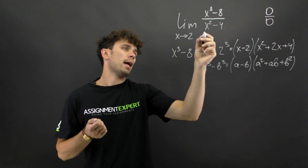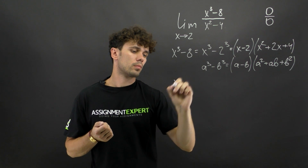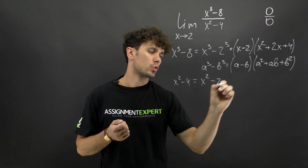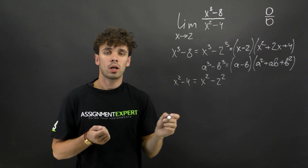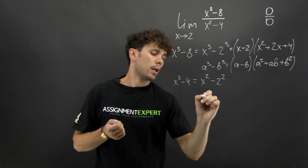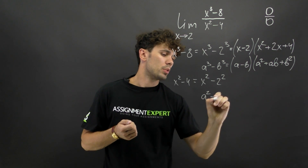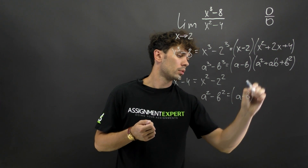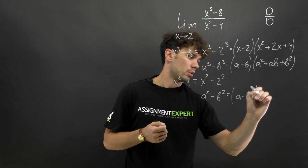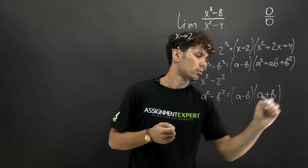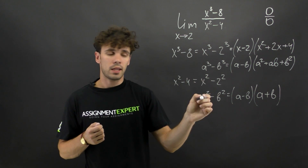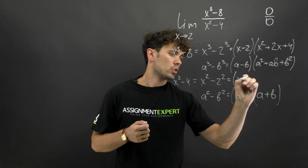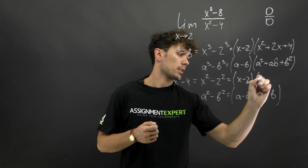Now the denominator: x squared minus 4 equals x squared minus 2 squared. This is similar to the difference of squares formula: a squared minus b squared equals a minus b times a plus b. Again x is a and 2 is b, so we obtain x minus 2 times x plus 2.